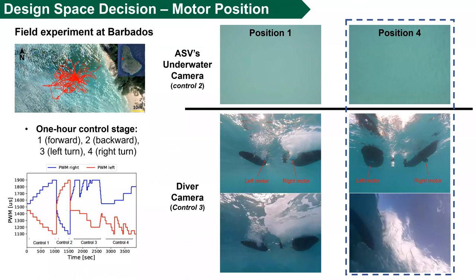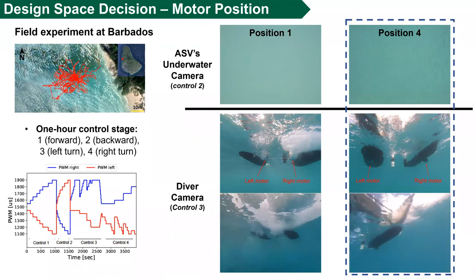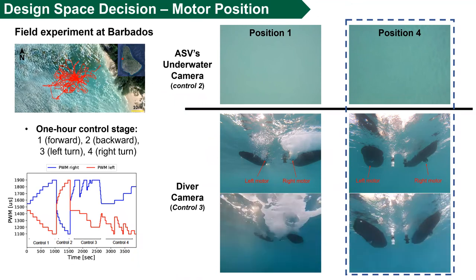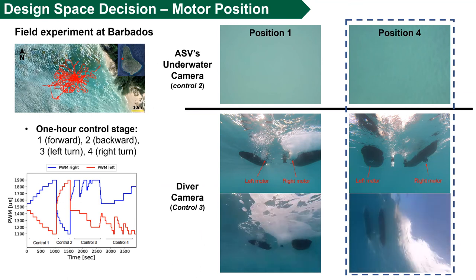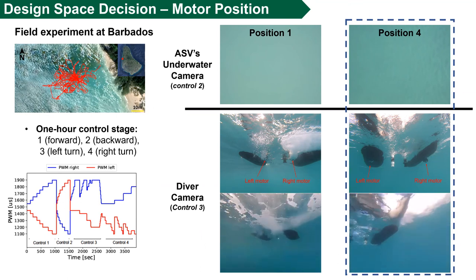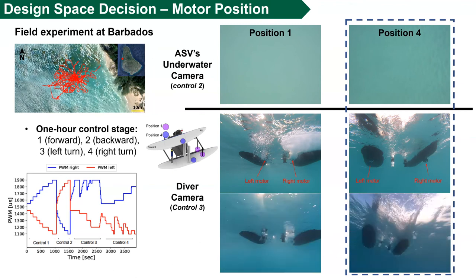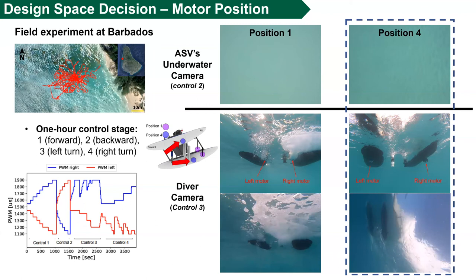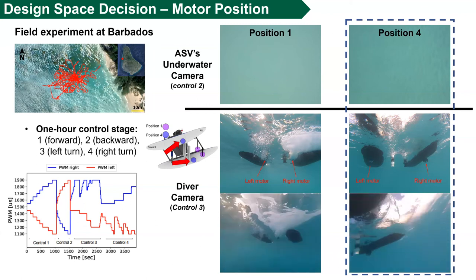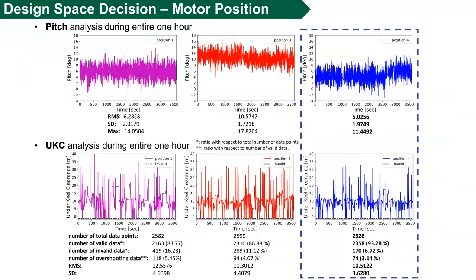To validate the simulation experiment carried out with CFD, we conducted a field test to make a decision on the motor positions in a dynamic environment at Barbados. By using a customized PWM signal, we qualitatively and quantitatively checked. The qualitative images from the ASV's underwater camera and diver camera show that position 4 is ideal because of cleaner and sharper images with less cavitation effect caused by motors. We also quantitatively analyzed pitch and depth measurement by sonar during this experiment. Among all motor positions, position 4 showed the least pitch angle on average as well as its variations, and also the least amount of overshooting data and invalid numbers.